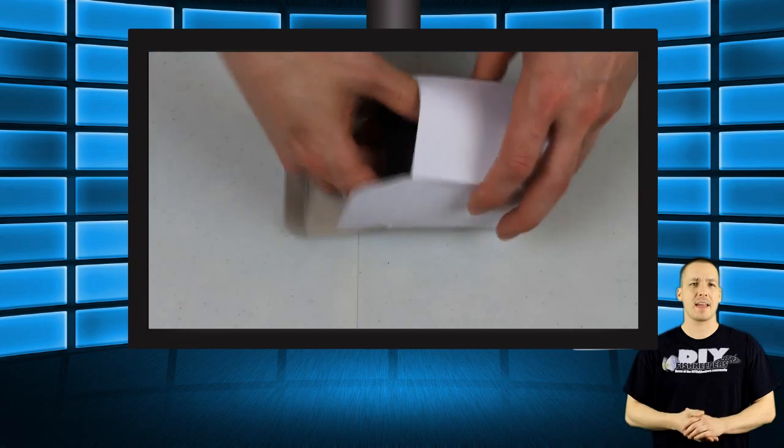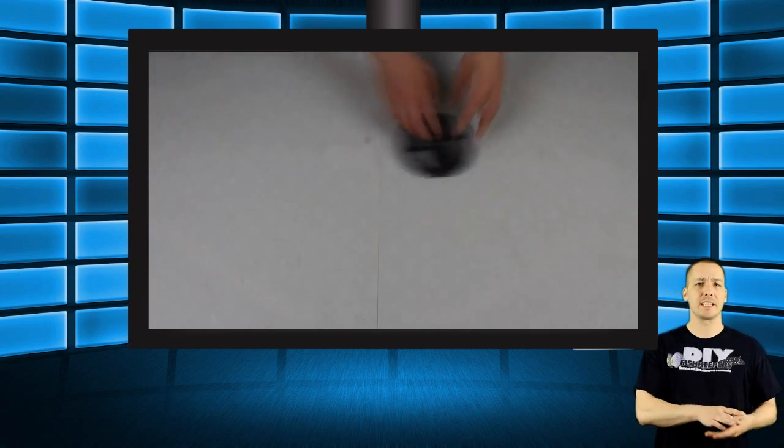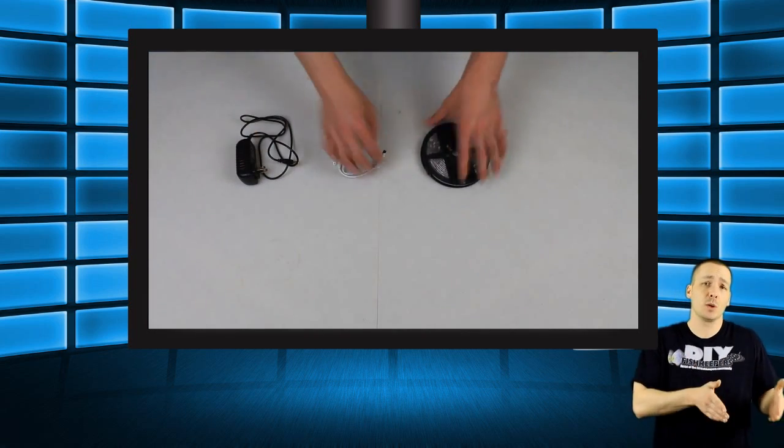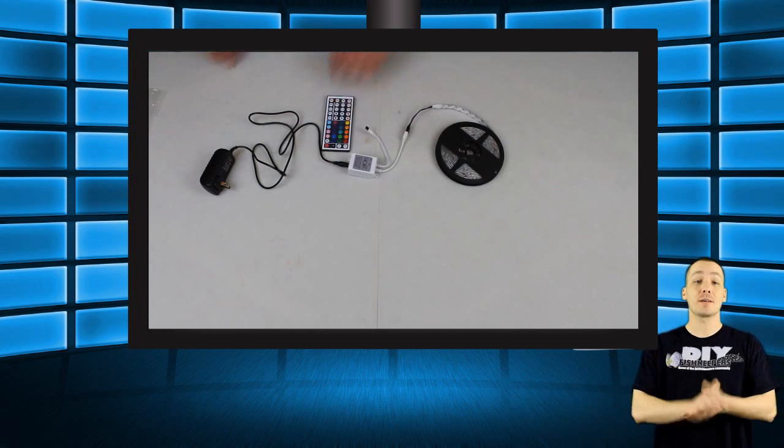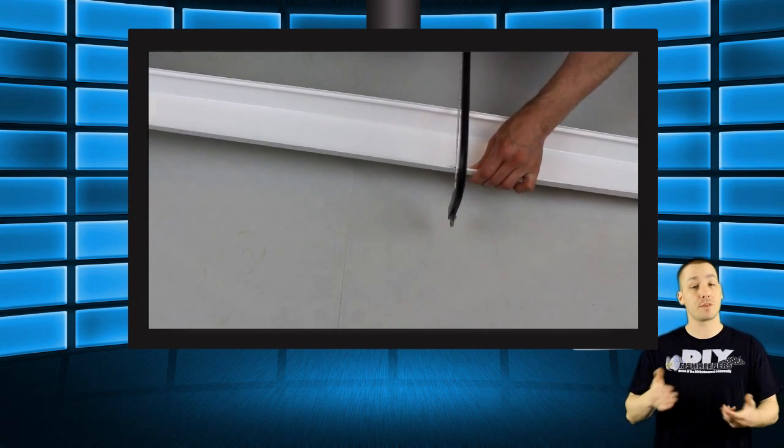We'll want to first start out by testing the LEDs. By simply connecting the roll of LEDs to the controller and then the controller to the power supply, we have completed the assembly. Now we can move on to preparing the housing for the LEDs.